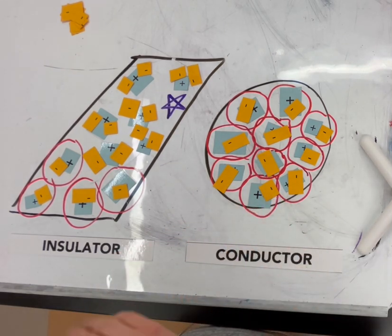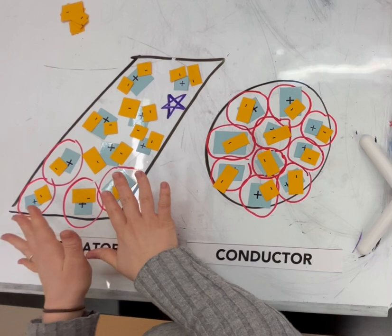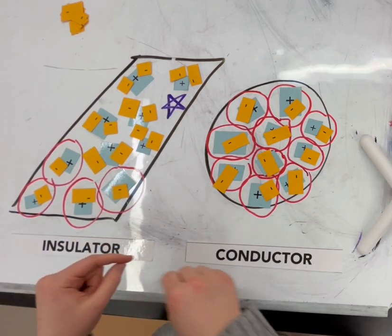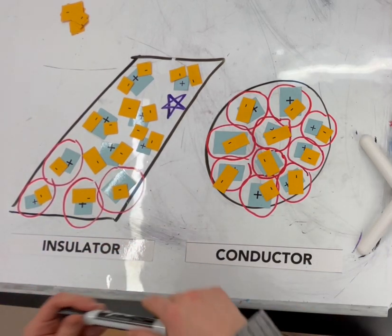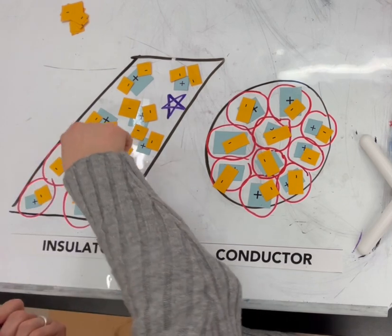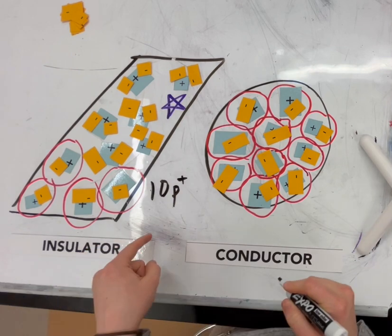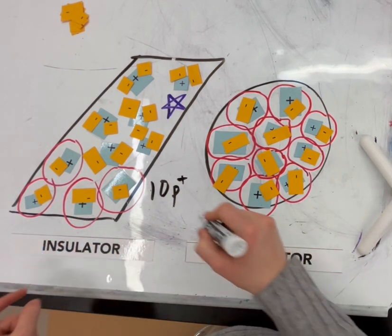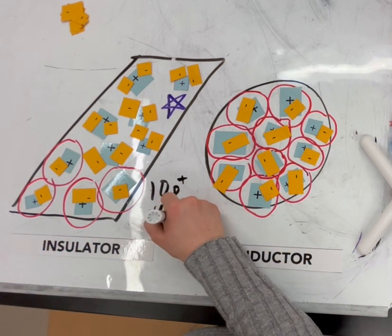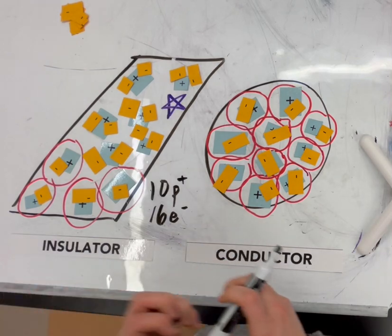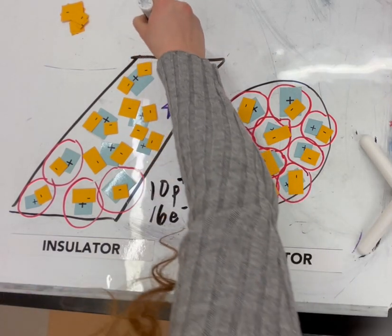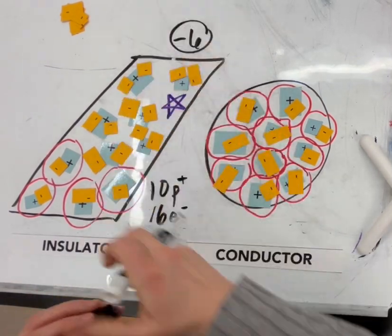All right, so let's start with the insulated strip. The insulated strip has 10 atoms, so there are 10 blue protons. In order for the strip to have a charge of negative six, that means it needs six more electrons than protons. So this is a charge of negative six.